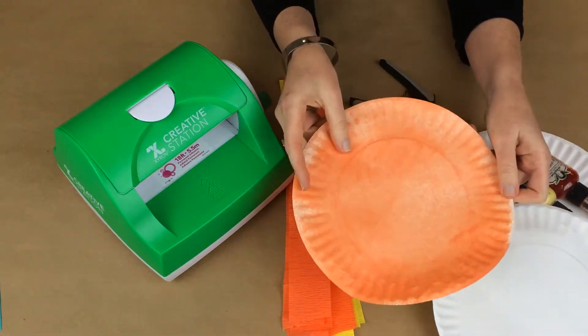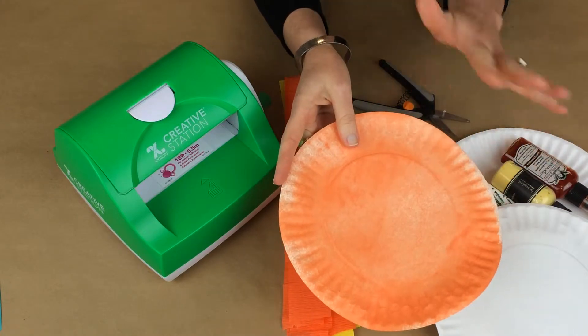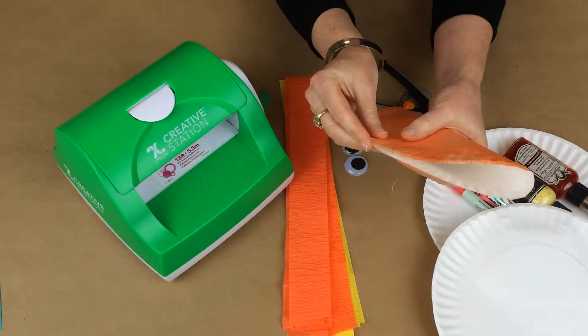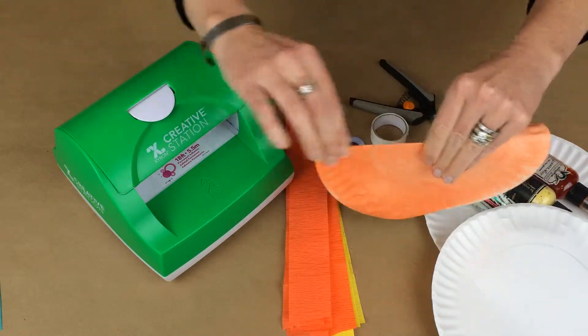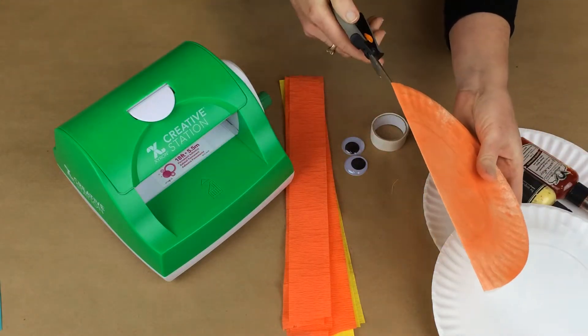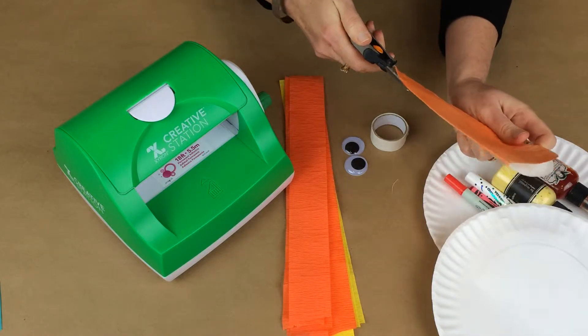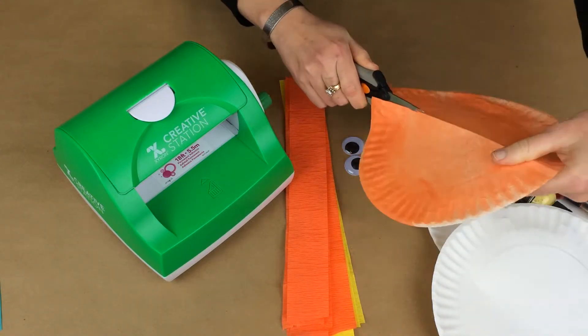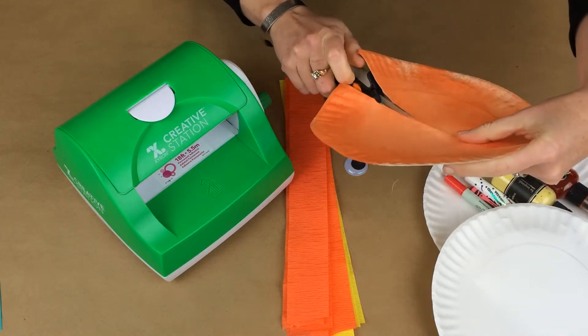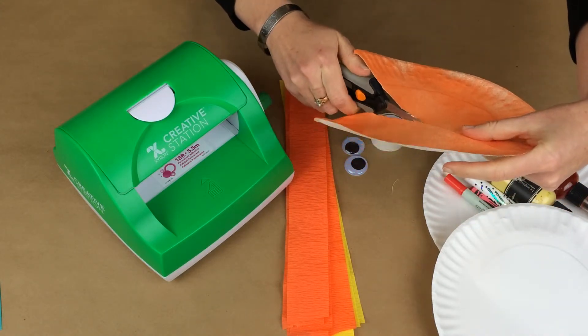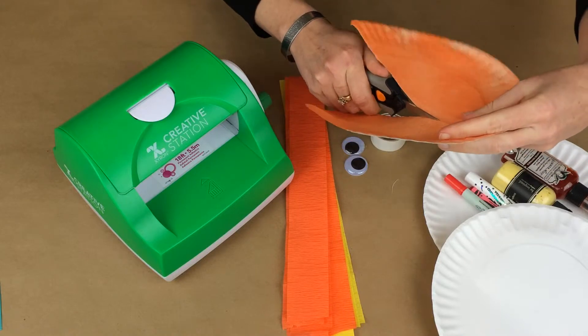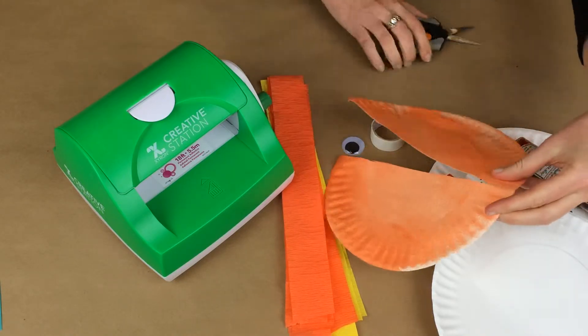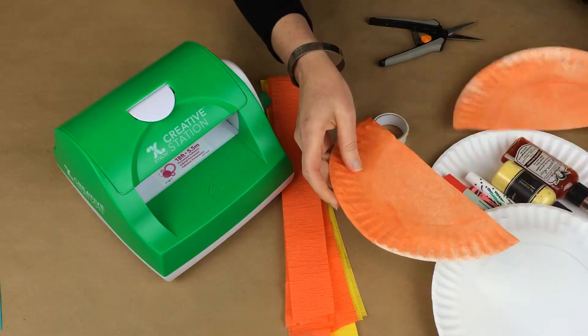I went ahead and misted mine orange, and so once it's dry or once it's completely covered, you're going to fold it in half and you're just going to take your pair of scissors. You could also do this with a trimmer if you have a trimmer at home. I'm just going to take my scissors and cut this in half, and it does not have to be exactly even because you're going to be covering the edges with your crepe paper so it doesn't matter. Then you're going to set one piece aside.